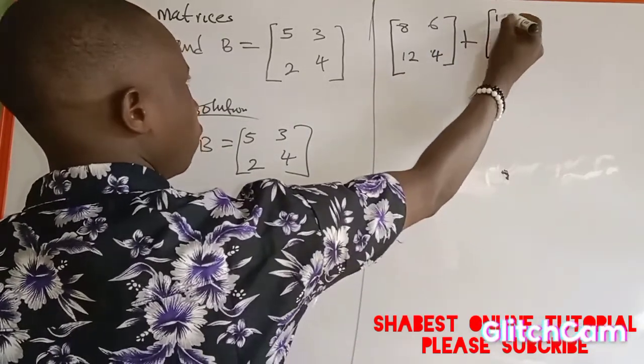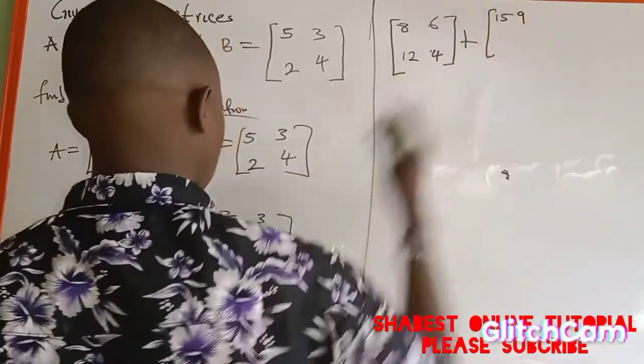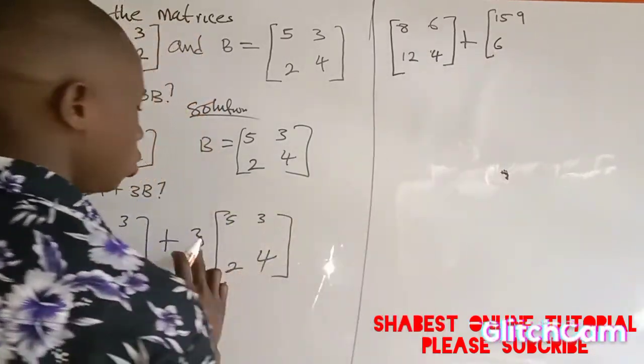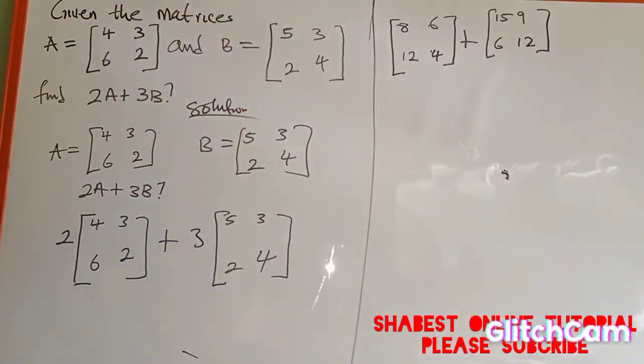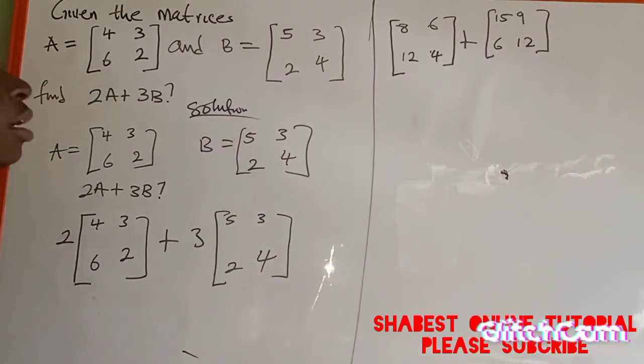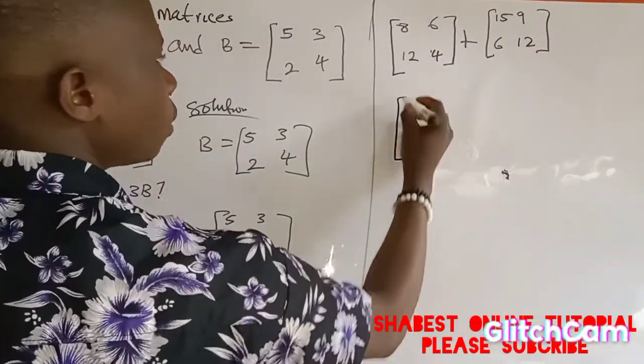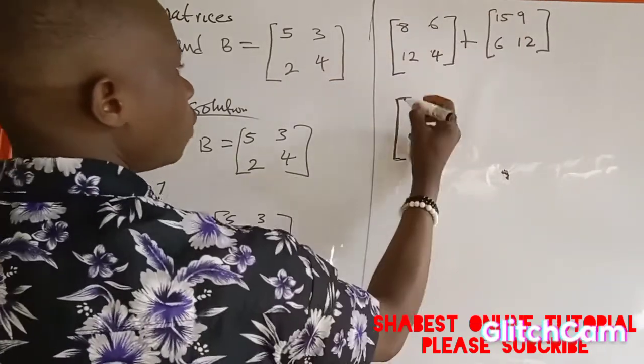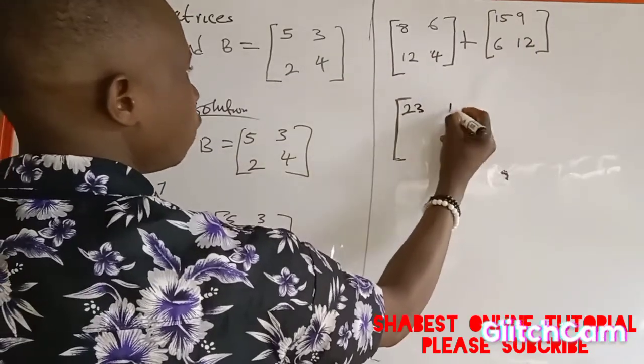The next thing we are going to do is to add these two matrices because of the positive sign. So 8 plus 15: I'll open a matrix—8 plus 15, I'll have 22; 6 plus 9 is 15.